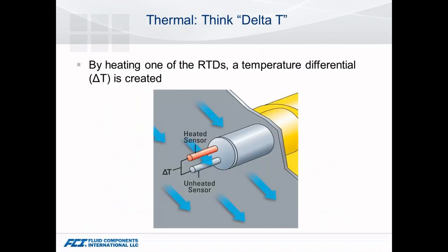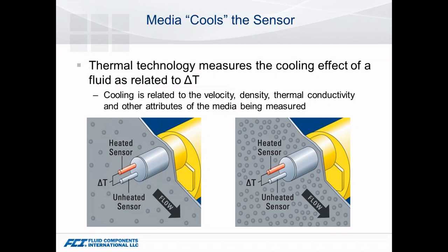Thermal technology is essentially creating a temperature differential — you think Delta T a lot of times. We have a heated sensor where we're putting current into either a heater or a self-heated RTD, comparing that to an unheated sensor and looking at that temperature differential. From that differential, we look at the cooling effects of the sensor — how that cooling is related to the velocity, density, and thermal properties of any media, whether liquid or gas.